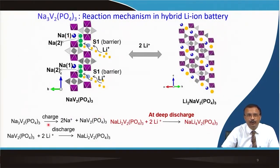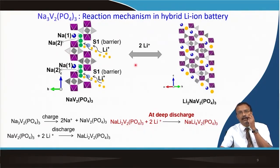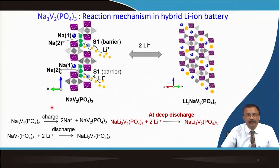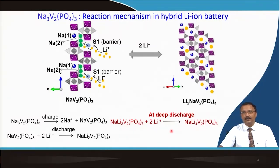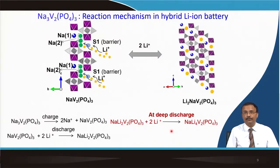Pictographically, within the lantern structure there are two different types of sodium positions — sodium 1 and sodium 2. There are 2 and 1 sodiums in these positions, totaling 3. You extract two of them while one remains, and you push lithium into it. During charge, sodium comes out; during discharge, you replace it with lithium. You can do deep discharge as well — similar to spinel-type positive material — and insert extra lithium at lower voltage. That is why this material can be used as both anode and cathode to make a symmetric battery.